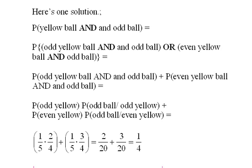Here's how we do it: the probability that we're drawing an odd yellow ball times the probability of an odd ball given that we drew an odd yellow. The probability of drawing an odd yellow: one out of five is an odd yellow.